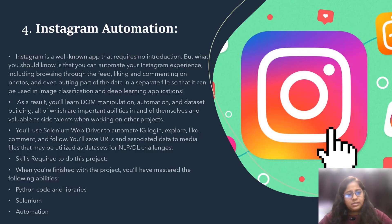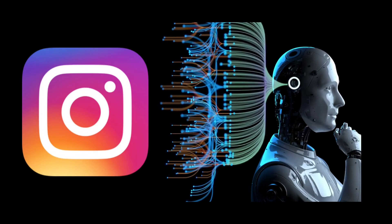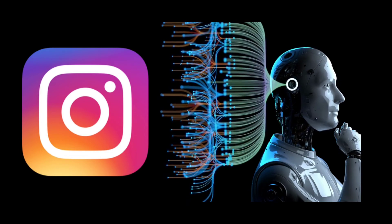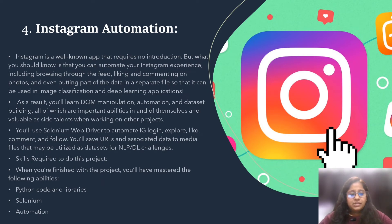Our fourth project is Instagram Automation. Instagram is a well-known app that needs no introduction, but what you should know is that you can now automate your Instagram experience — including browsing through feeds, liking and commenting on photos, and even putting data into a separate file so it can be used in image classification and deep learning applications. The basic skills required are proficiency in Python, knowledge of Python libraries, Selenium, and automation.